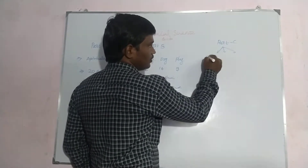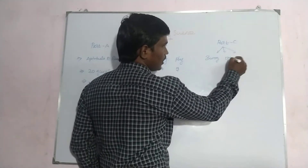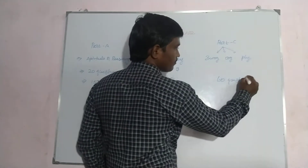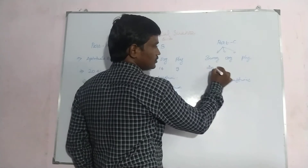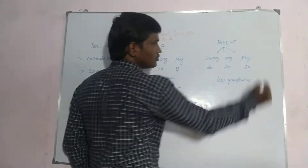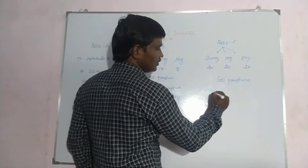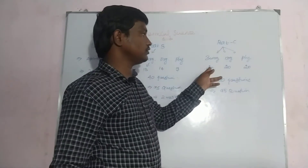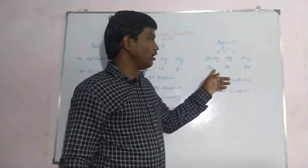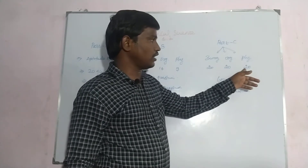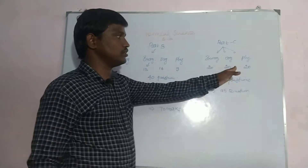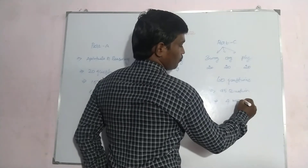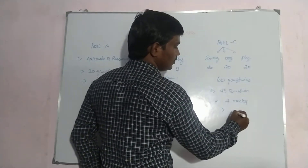Then Part C — you will get inorganic questions, organic questions, and physical chemistry questions. Total 60 questions are available: 20 for inorganic, 20 for organic, and 20 for physical chemistry. You must attempt 25 questions out of these, choosing any combination — for example, 10, 10, and 5, or 7, 10, and 8. Each question is 4 marks, so you will get 100 marks on your Part C portion.